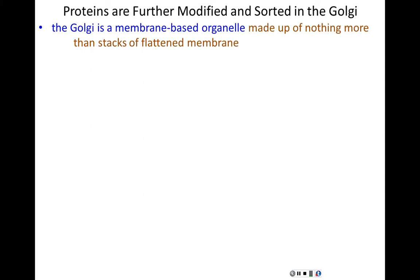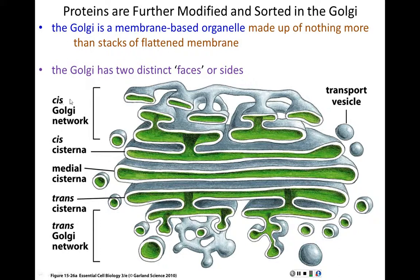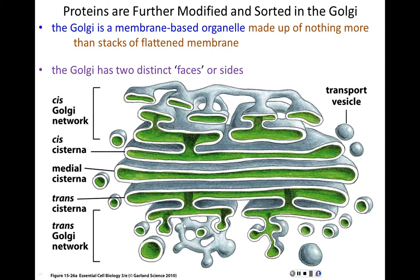The Golgi is really nothing more than a membrane-based organelle made up of flattened stacks of membrane stacked upon each other. The Golgi has two distinct sides or faces. The entry side — where things and cargo proteins arrive — is referred to as its cis face, and this face faces the ER. The exit portion of the Golgi, the opposite end, is called the trans face, where cargo leaves the Golgi off to the lysosome, the cell membrane, etc.